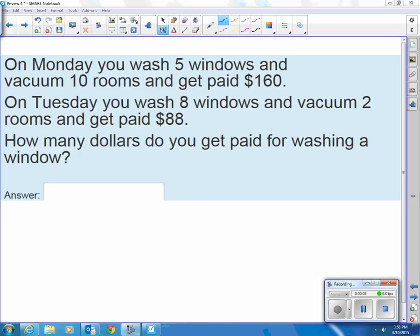Continuing with the review, we have a system of equations. The first equation for Monday would be 5 windows plus 10 rooms. 5 of whatever I get paid for a window plus 10 of whatever I get paid for a room equals $160.